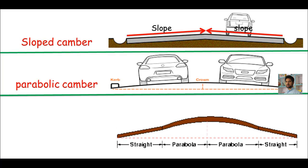You may have seen camber in such a way. Look at this portion: this is a slope, this is a parabola, and again this is a slope. It means this camber is a combination of these two.